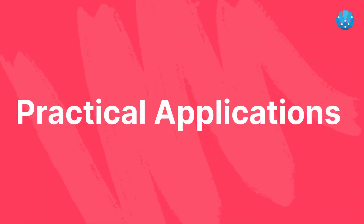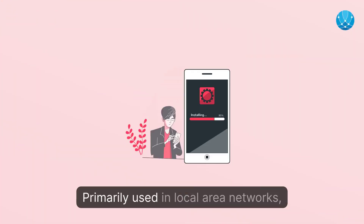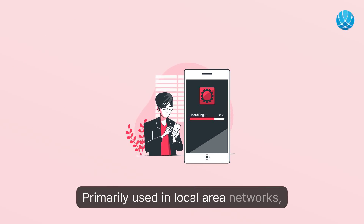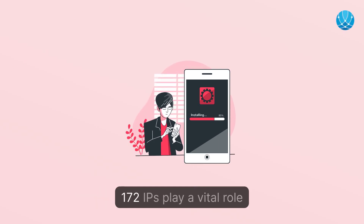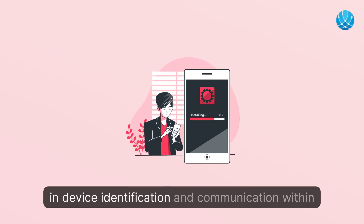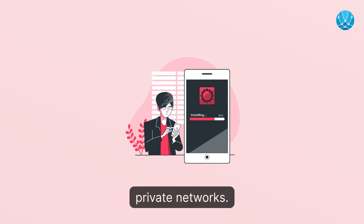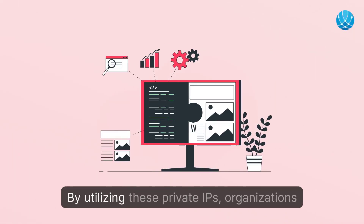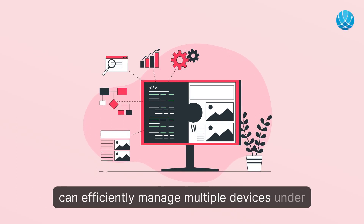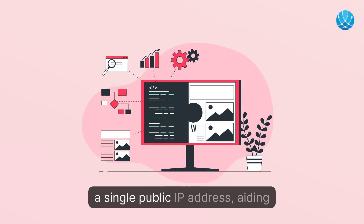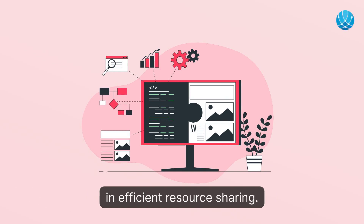Practical applications. Primarily used in local area networks, 172 IPs play a vital role in device identification and communication within private networks. By utilizing these private IPs, organizations can efficiently manage multiple devices under a single public IP address, aiding in efficient resource sharing.